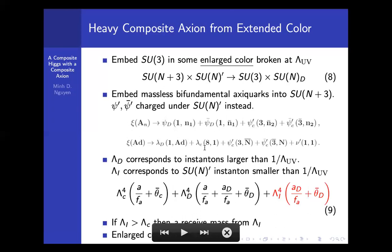In this case, the procedure is the same. We find out there's still going to be two axions. But it turns out that now the effective potential in the IR is going to be different. There's going to be a new contribution coming from the enlarged color breaking.